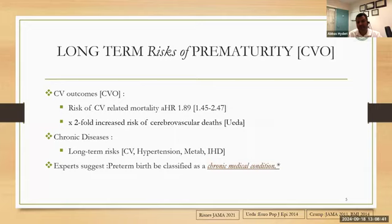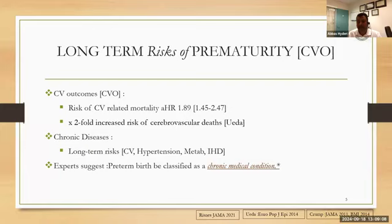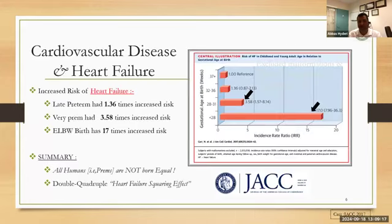This data from 2.6 million live births shows that the risk of cardiovascular-related mortality is nearly twice as much, and the risk of cerebrovascular mortality is twice as much. There are also risks of long-term cardiovascular and metabolic diseases. Some experts are now suggesting that preterm birth itself should be classified as a chronic medical condition. The most obvious chronic cardiovascular outcome is congestive heart failure.